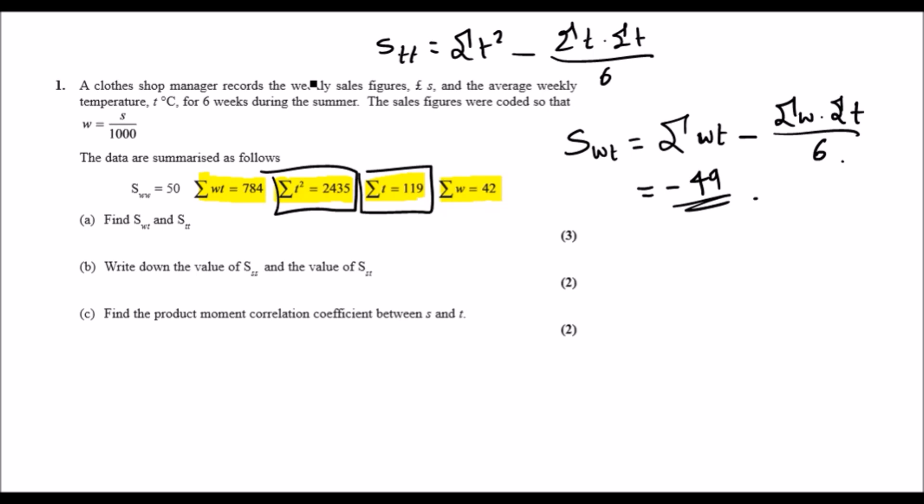So what do you have? You've got 2435 minus 119 times 119 over 6, and I've got mixed fractional and improper fractions, so I'm going to use the result of 449 over 6.